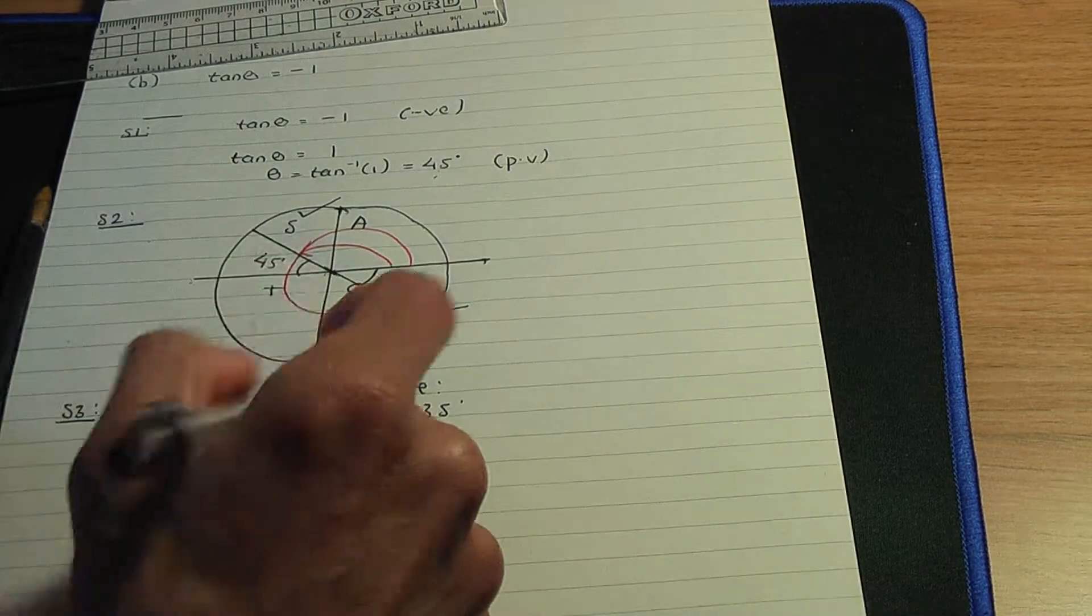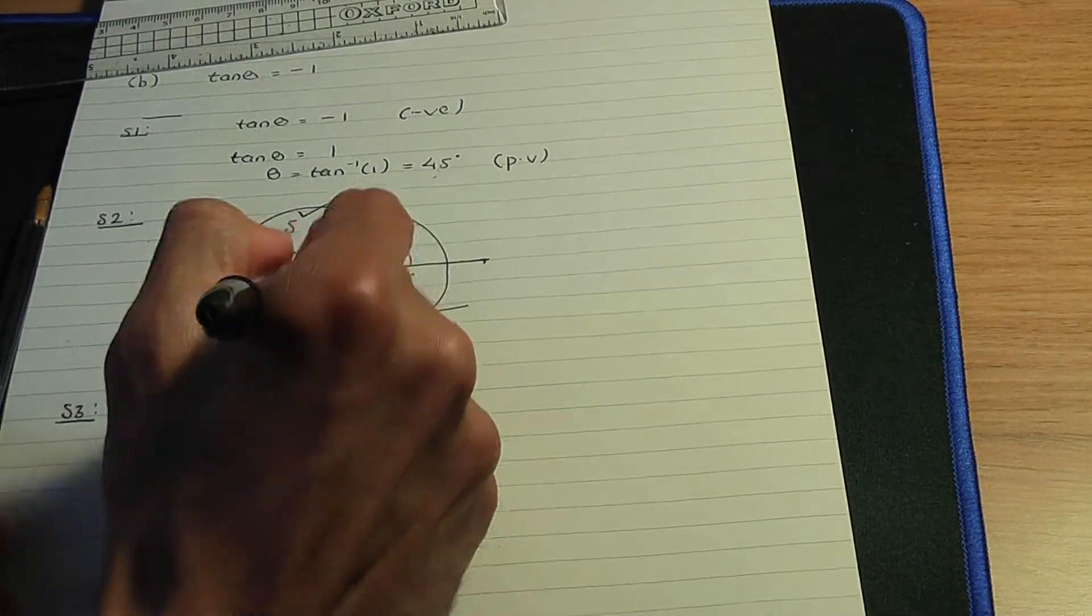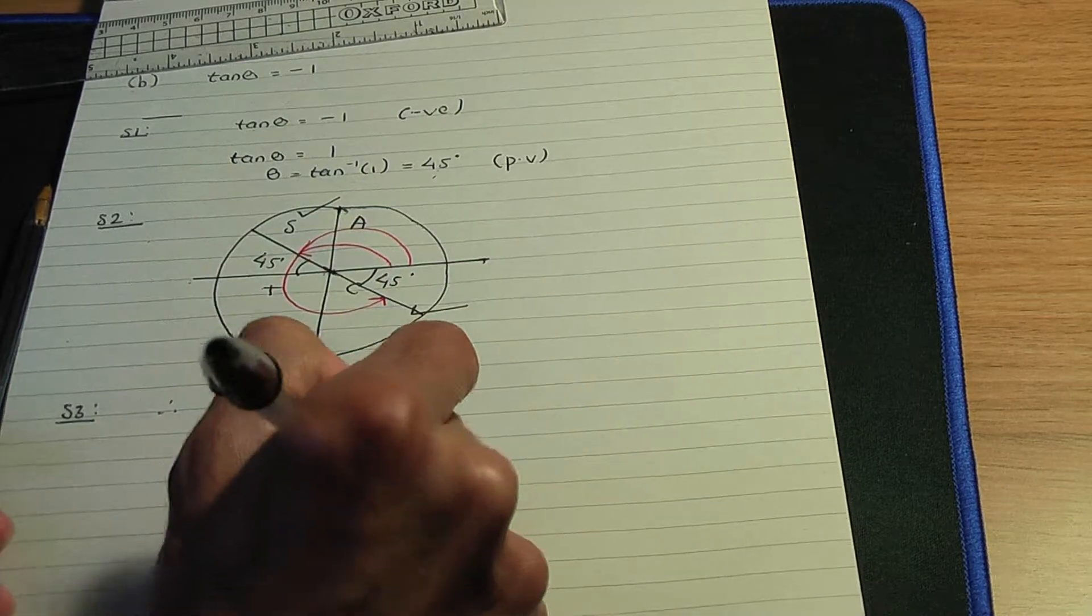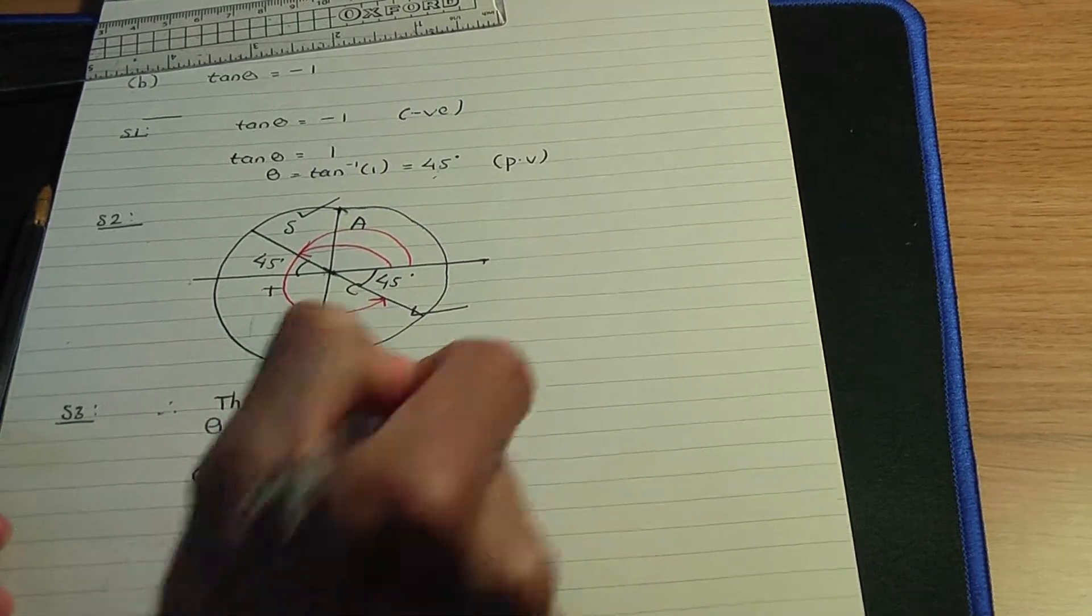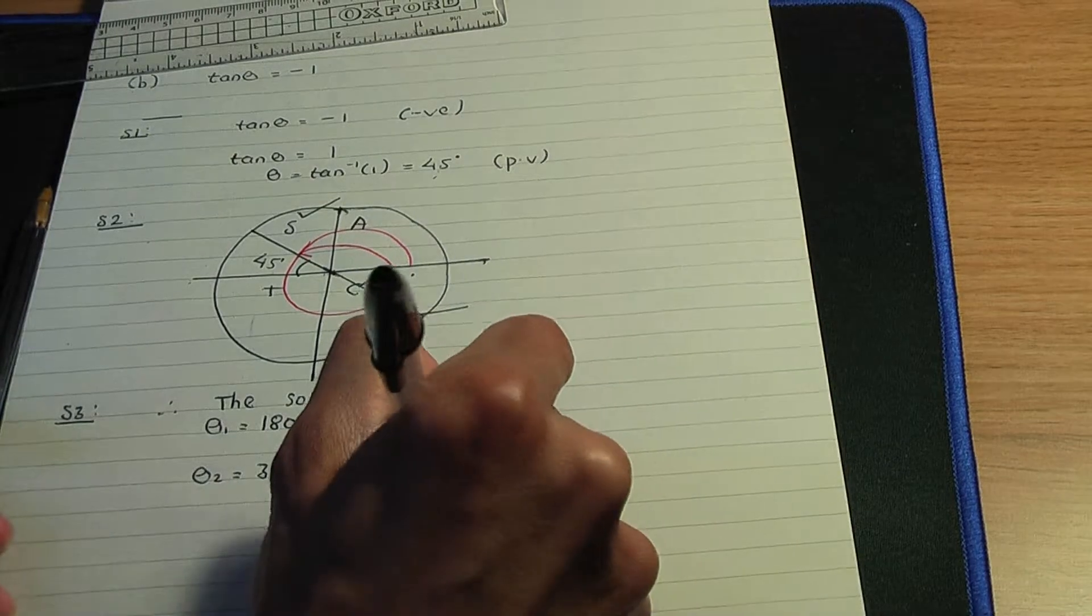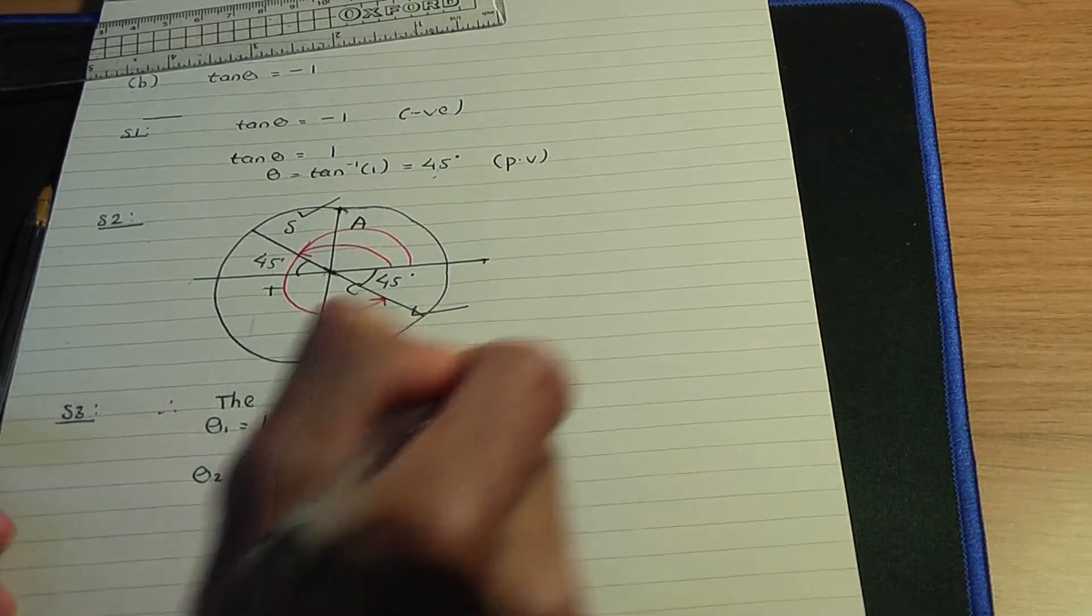So that solution, theta 2, will be 360 minus the acute angle of 45 degrees. So that would be 315 degrees.